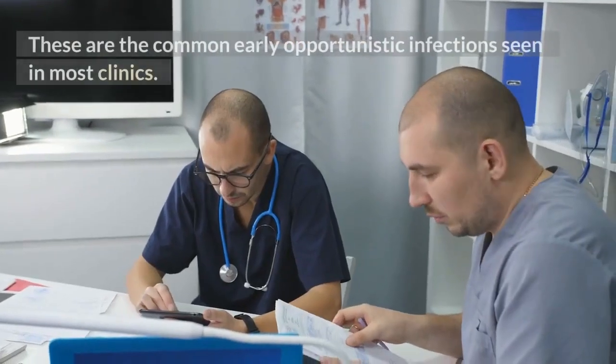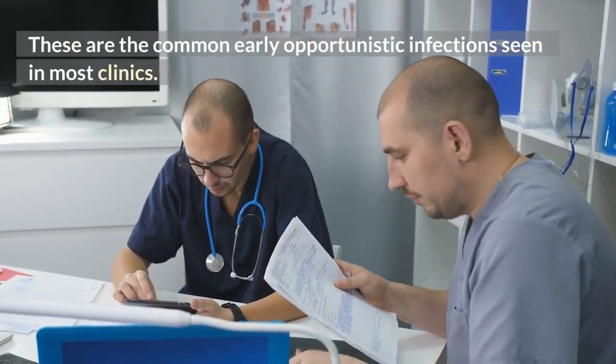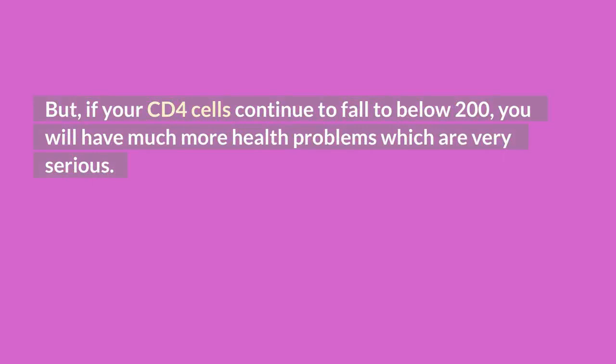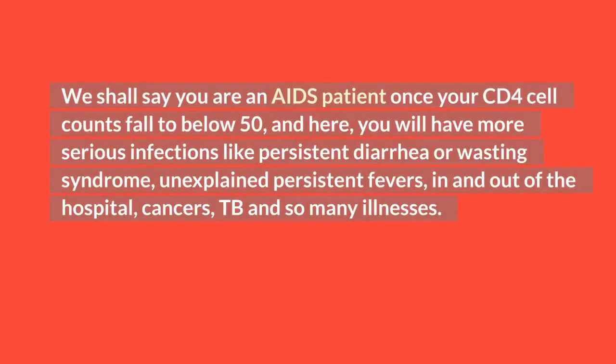These are the common early opportunistic infections seen in most clinics. But if your CD4 cells continue to fall to below 200, you will have much more serious health problems. We shall say you are an AIDS patient once your CD4 cell counts fall to below 50, and here you will have more serious infections like persistent diarrhea or wasting syndrome, unexplained persistent fevers, frequent hospitalizations, cancers, TB, and so many illnesses.